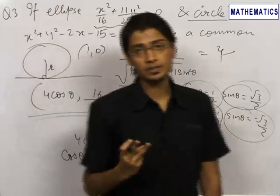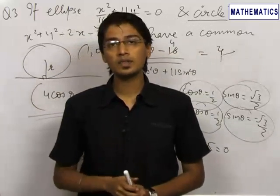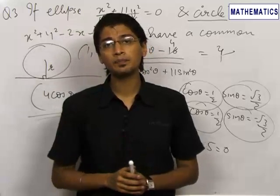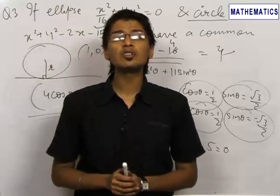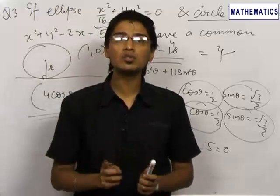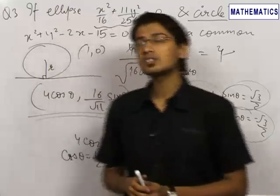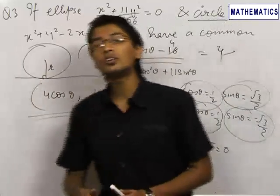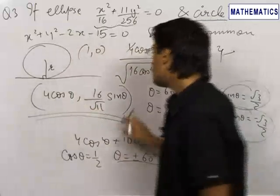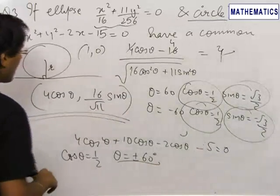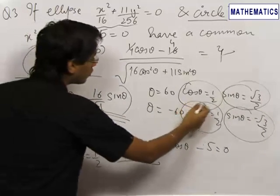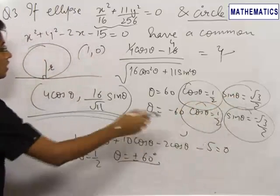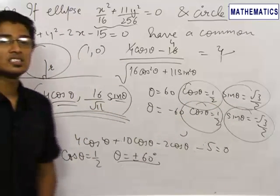In this question we learned 3 things. If a common line is tangent to two curves, we can either write tangent equations for both curves and compare them, or write the tangent for one curve and set discriminant to 0 when substituting into the second curve, or — in the special case of a circle — draw a perpendicular from the center onto the tangent and equate it to the radius. The final point of contact is (4 cos θ, 16/√11 · sin θ), where for the first tangent cos θ = 1/2 and sin θ = √3/2, and for the second tangent cos θ = 1/2 and sin θ = −√3/2.